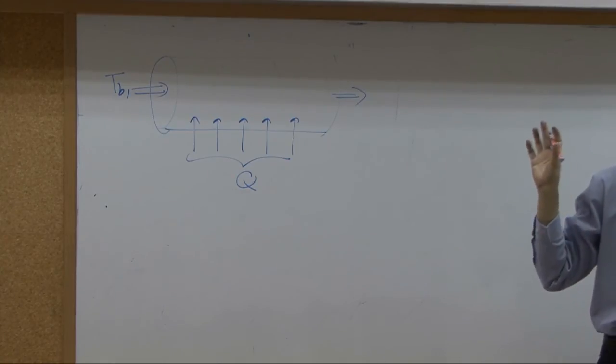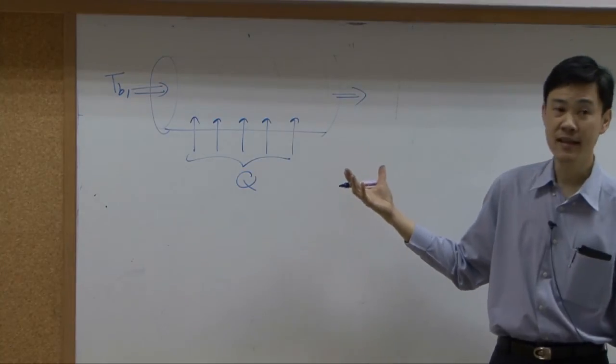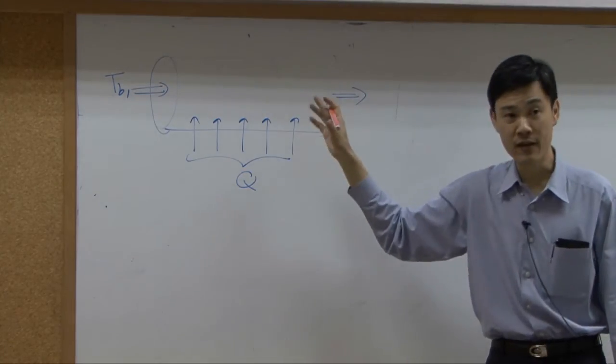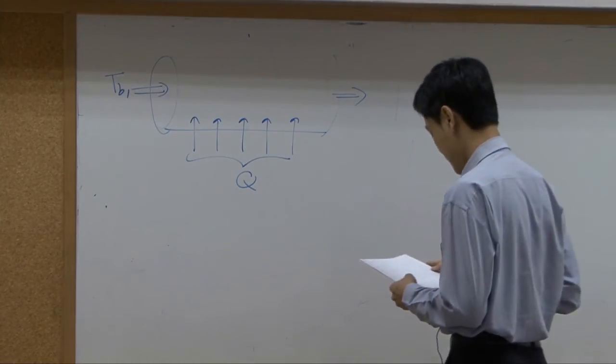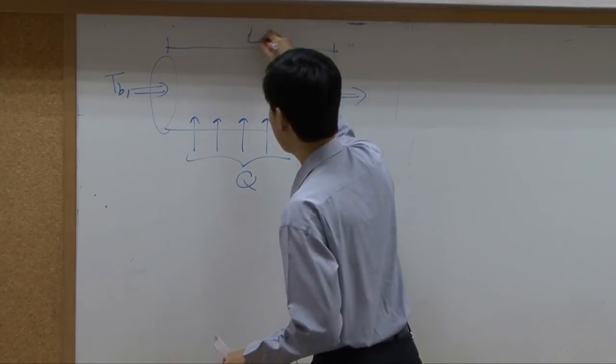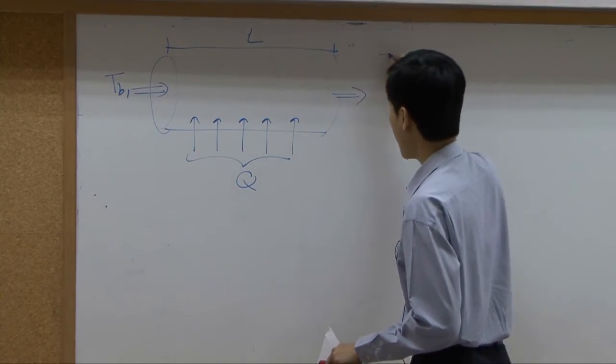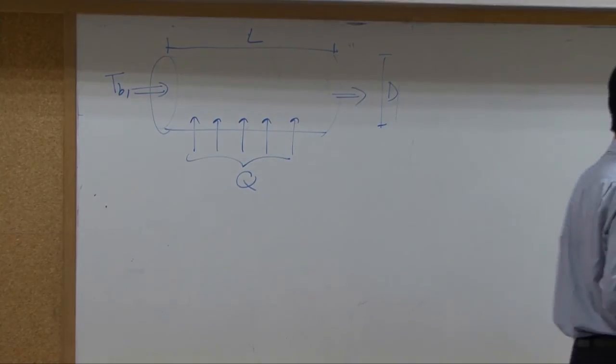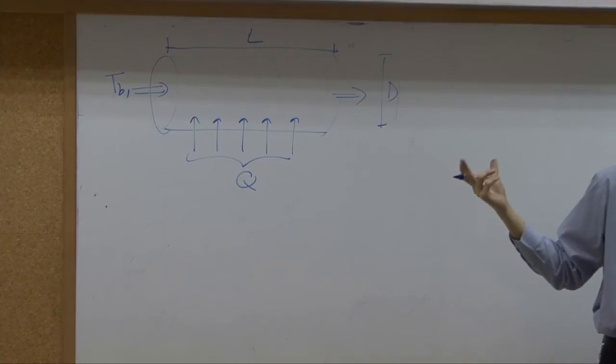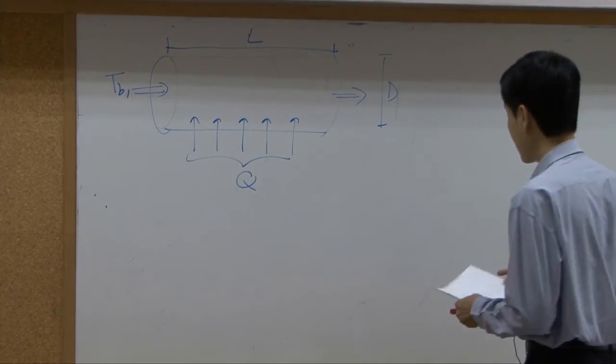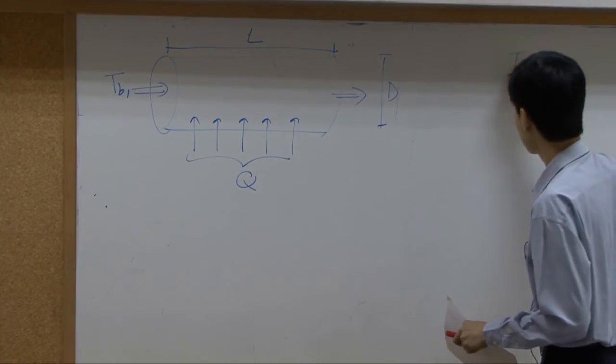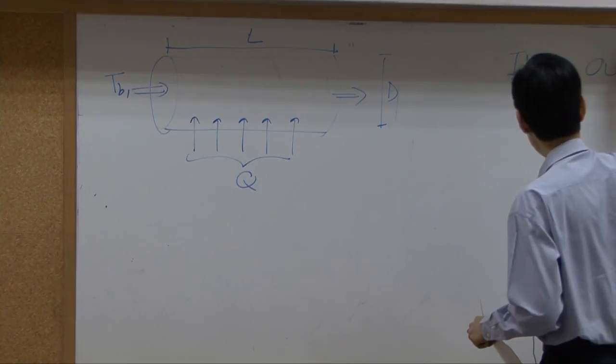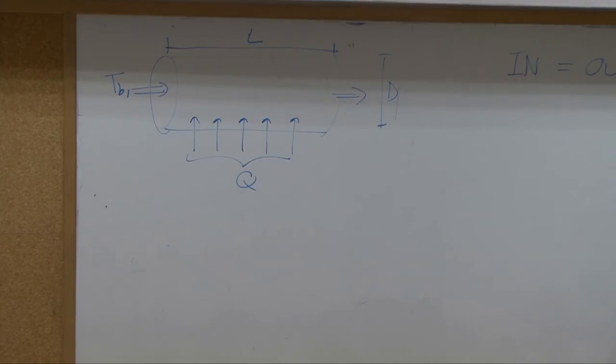Now, if you have a pipe and you have some heated source that heat the fluid in the pipe. Suppose the length, the heated length is L. Diameter is D. If you take overall energy balance around the heated section, then you have input equal to output for energy balance macroscopically.